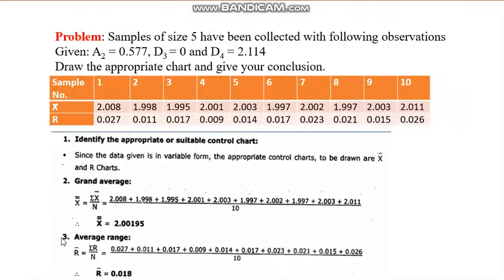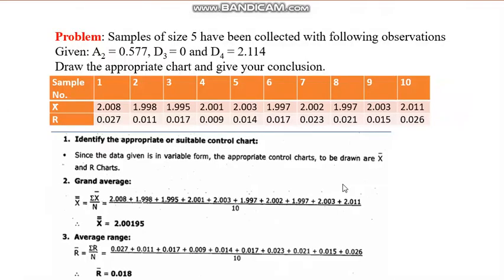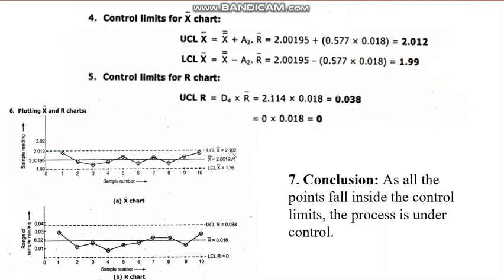After plotting the X-bar chart, none of the points fall outside the control limits, so we conclude the process is under control. Similarly for the R chart, plotting R1, R2, R3, etc., all points fall inside the control limits. Conclusion: the process is under control. If any point had gone outside, we would have said the process is not in control.